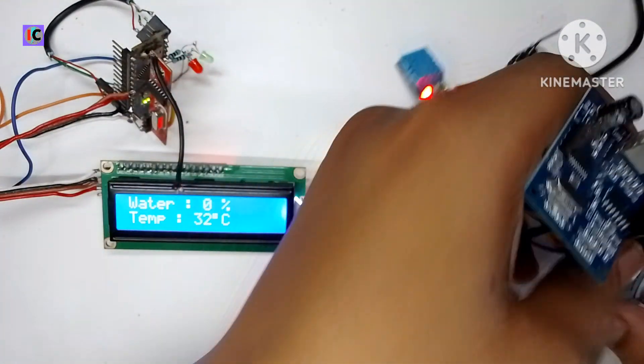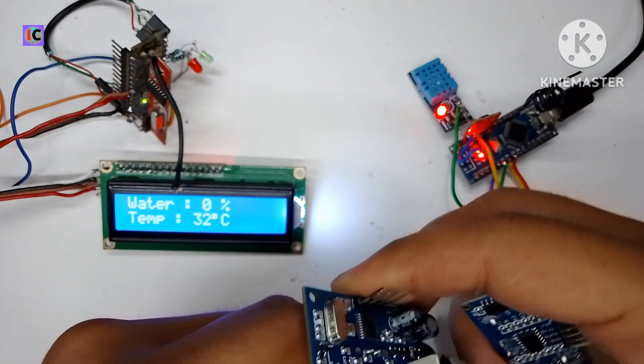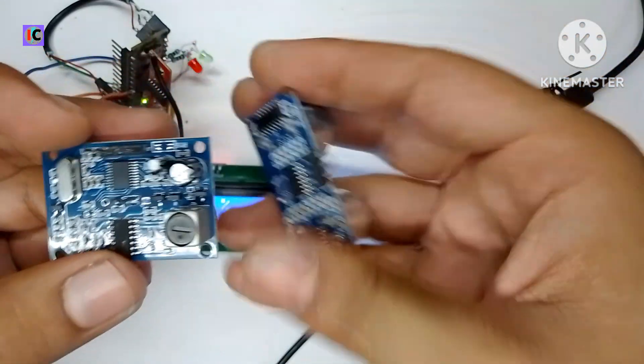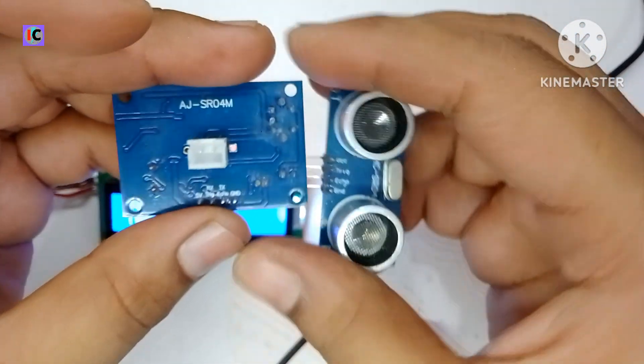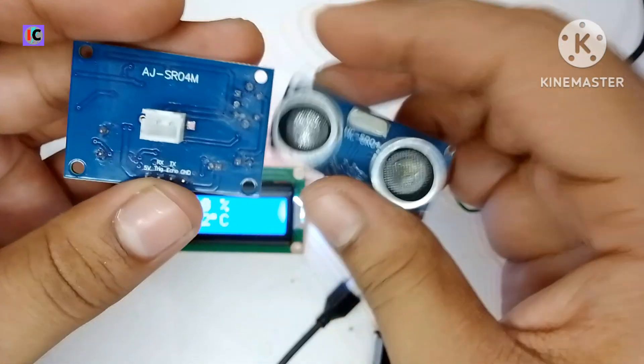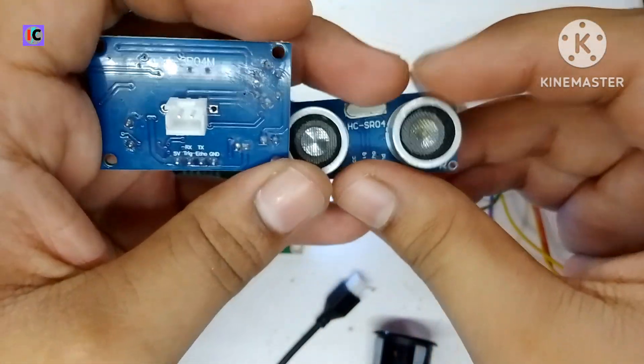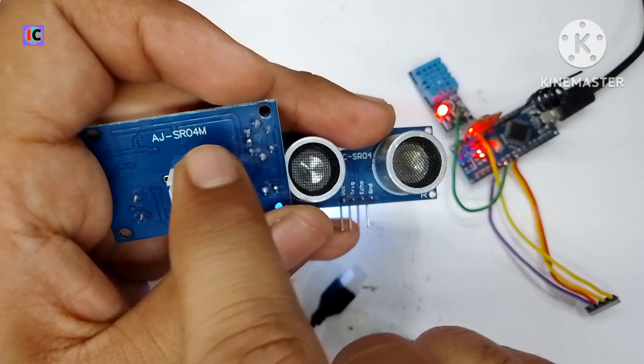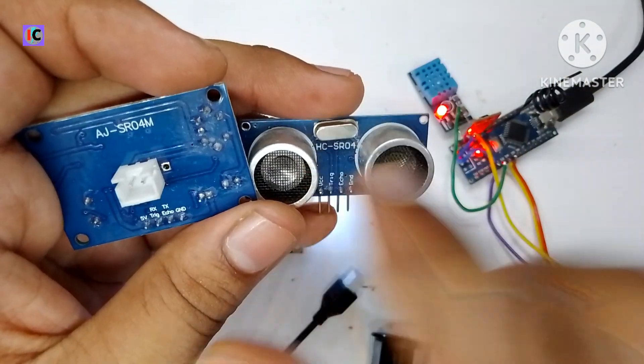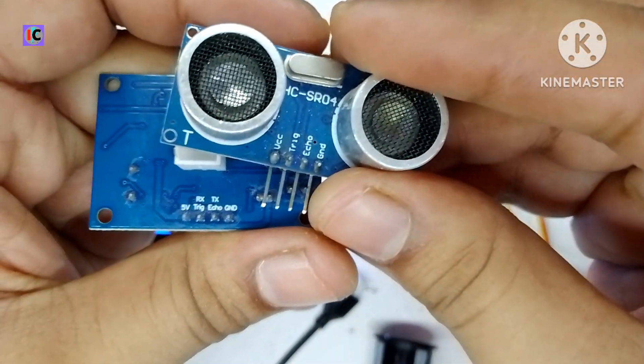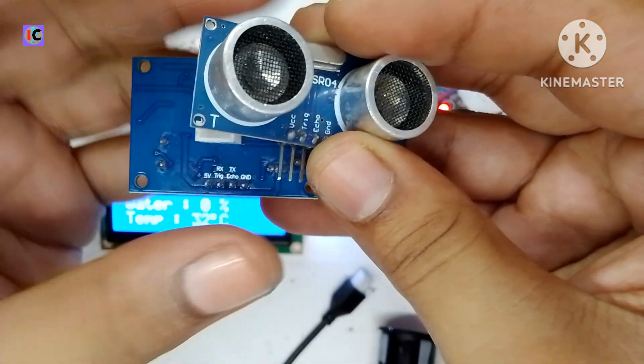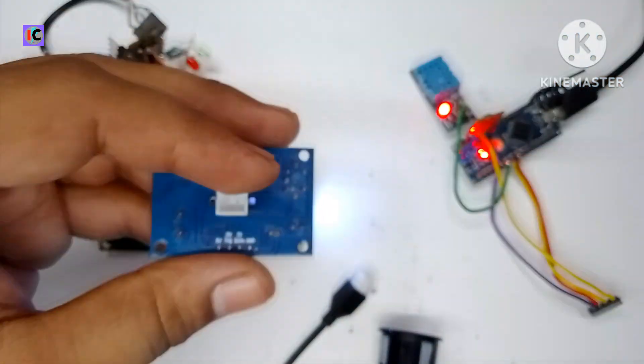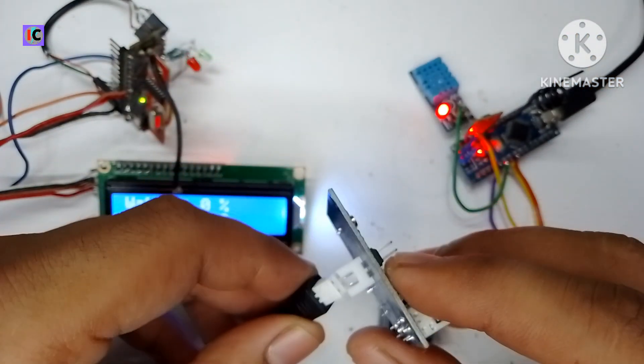For sensing the water level in the tank, I'm using this waterproof version. The pins of this sensor are the same as the HC-SR04 sensor. The model of this is HC-SR04M, which is the waterproof model. You can see the pinouts - VCC, trigger, echo, and ground pins are the same as the SR04 sensor.